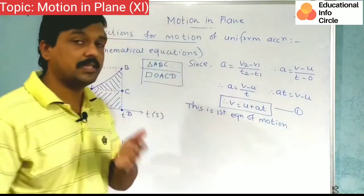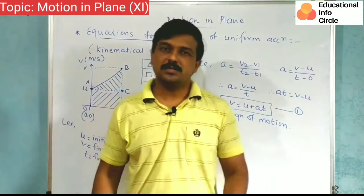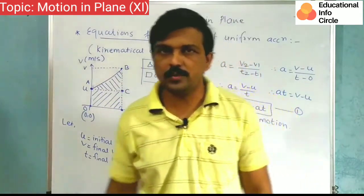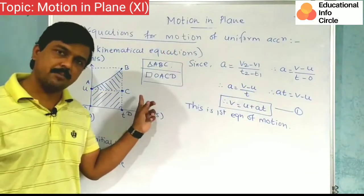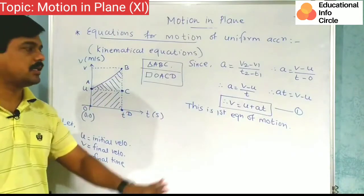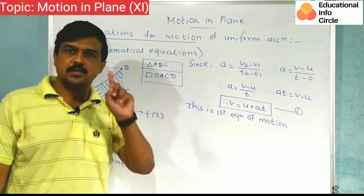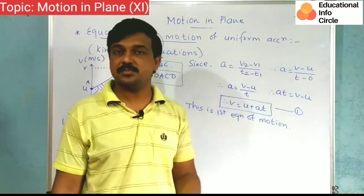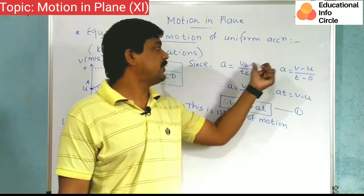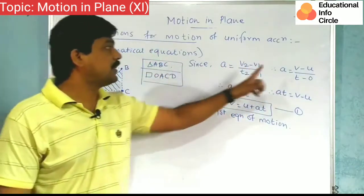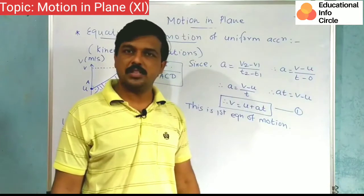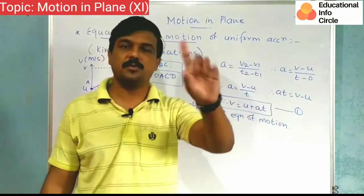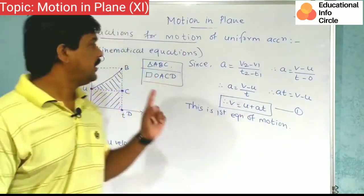Actually in basic studies I covered this. In basic lectures this method was different, but to avoid confusion I'm following your book. So we drew this graph, took the definition of acceleration. We wrote v2 minus v1 upon t2 minus t1, and according to the graph we substituted values. v2 is the v we got as final velocity, v1 is the u we got as initial velocity, t2 is t, t1 is 0. So we got the equation v is equal to u plus at. So this is our equation number 1 or first equation of motion.